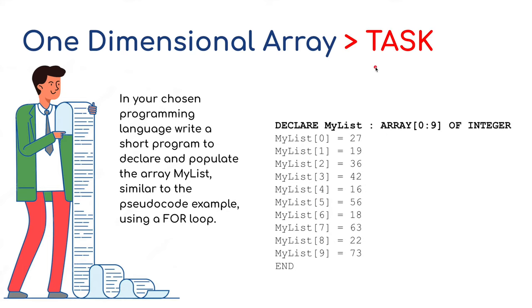We've got a little task for you to do. Using Python, or a programming language of your choice, write a short program to declare and populate the array my list, similar to the pseudocode example, using a for loop. So we're going to declare my list, and it's going to be an array of 10 items, item 0 to item 9, and these are going to be integer items. So we've got a list of numbers here. I want you to have a little go at creating that. Pause the video, and then I will go on and show you my result.